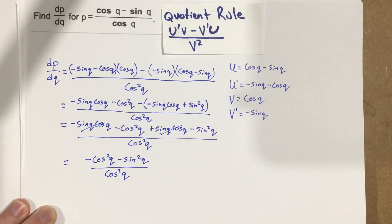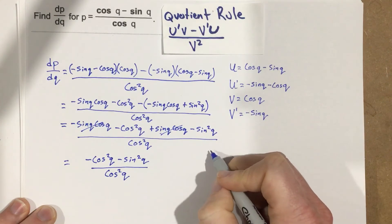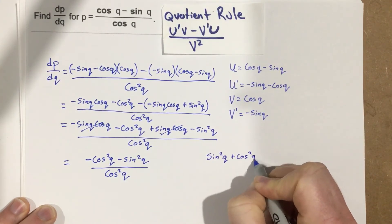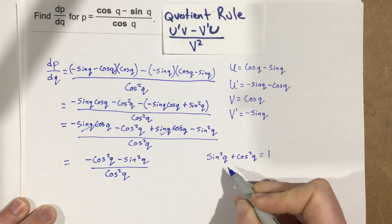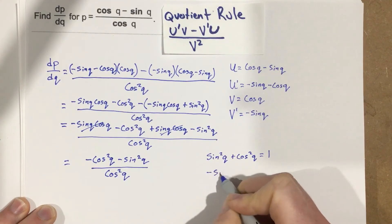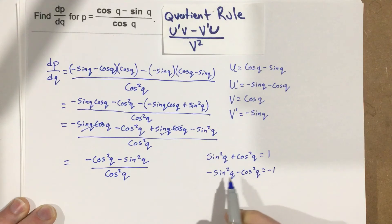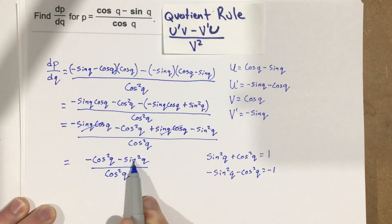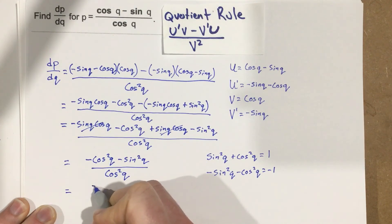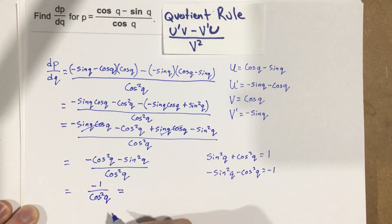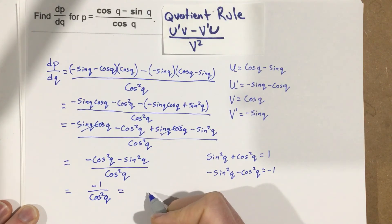There's a Pythagorean trig identity that says sine squared Q plus cosine squared Q equals one. If we multiply everything by negative one, we get negative sine squared Q minus cosine squared Q equals negative one. So negative cosine squared Q minus sine squared Q is just negative one. This means we can write the expression as negative one over cosine squared Q. And since one over cosine squared is secant squared, this equals negative secant squared Q.